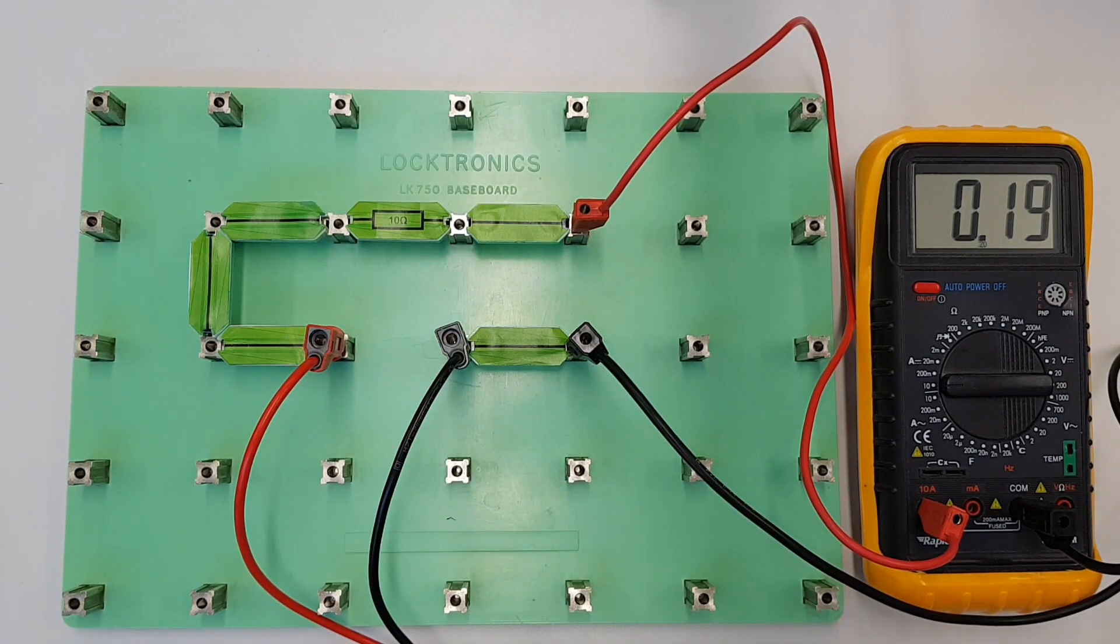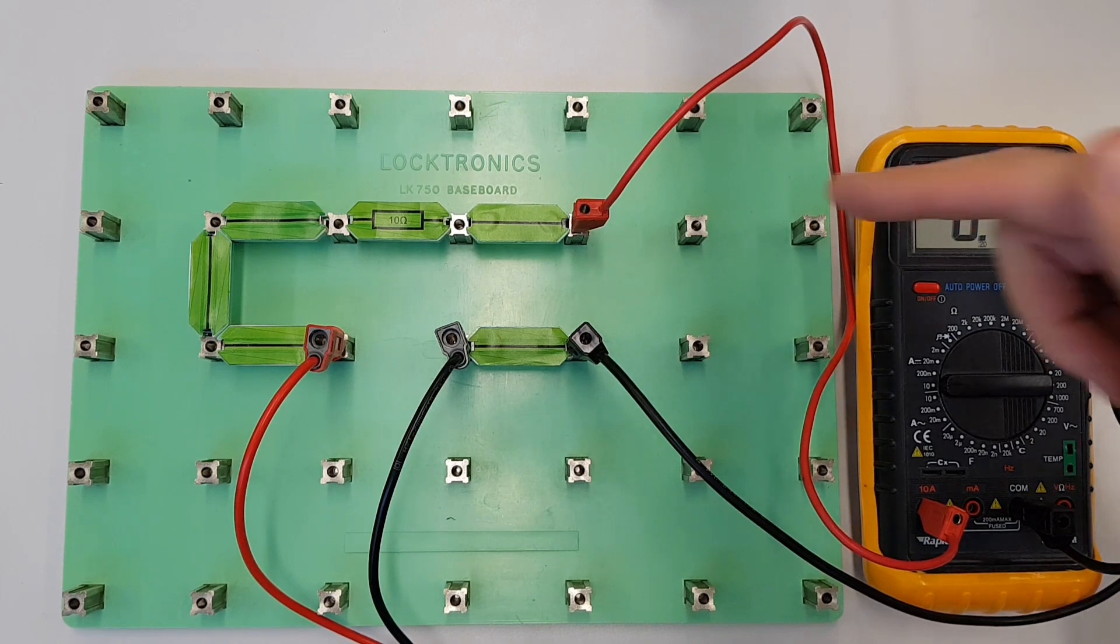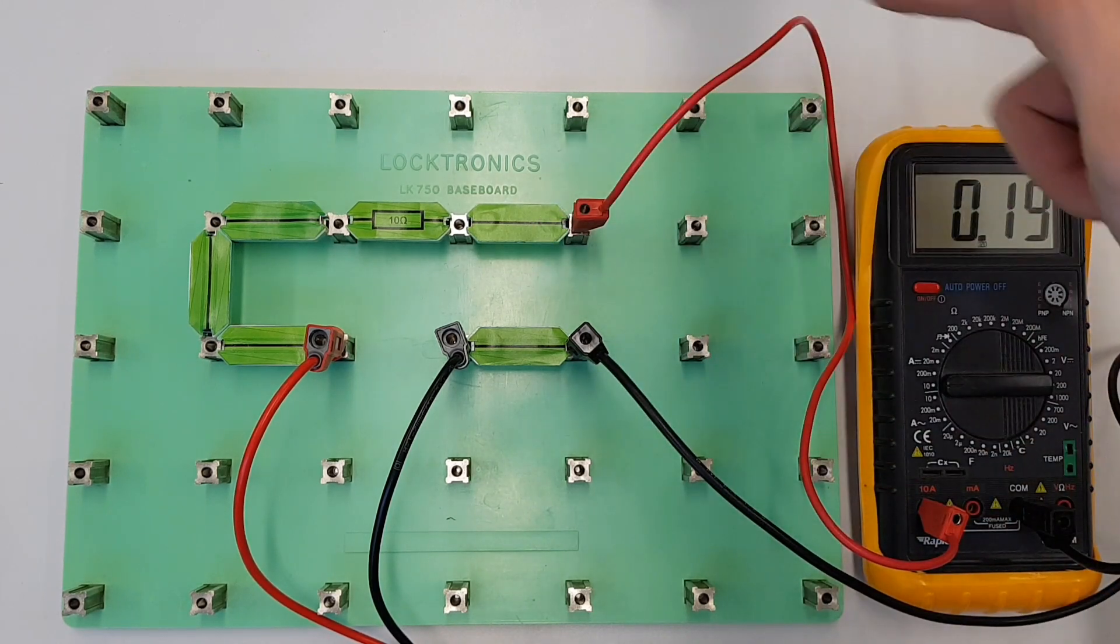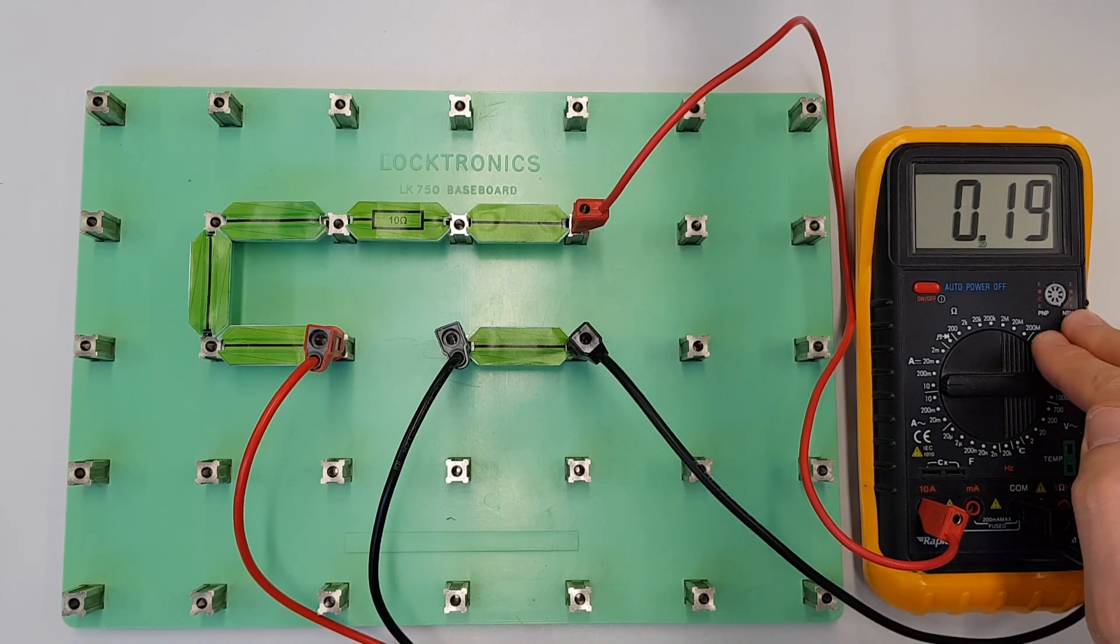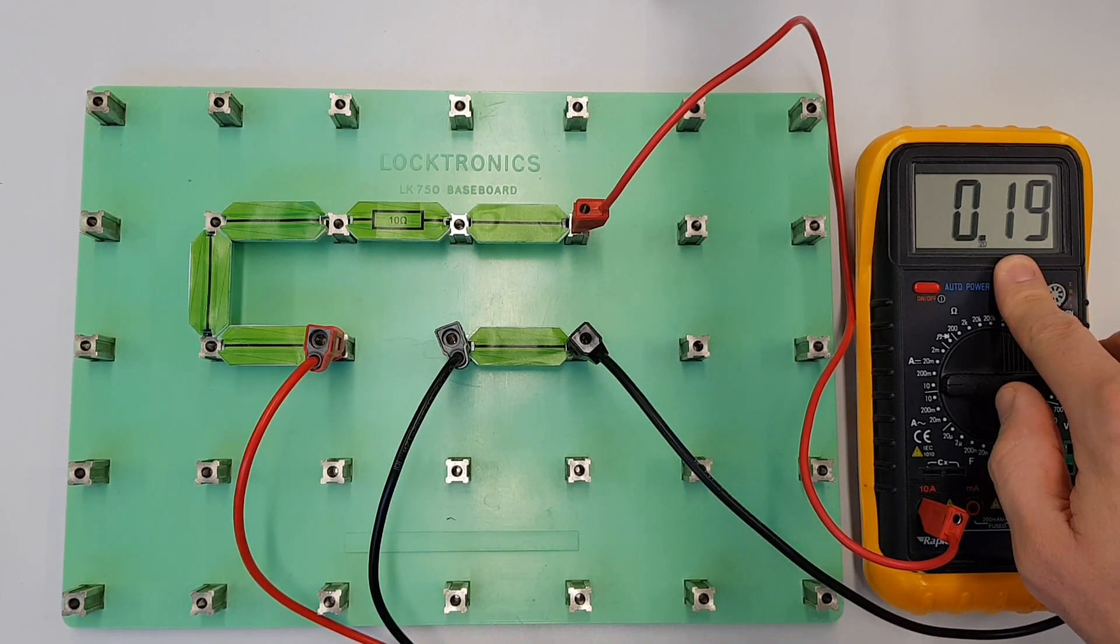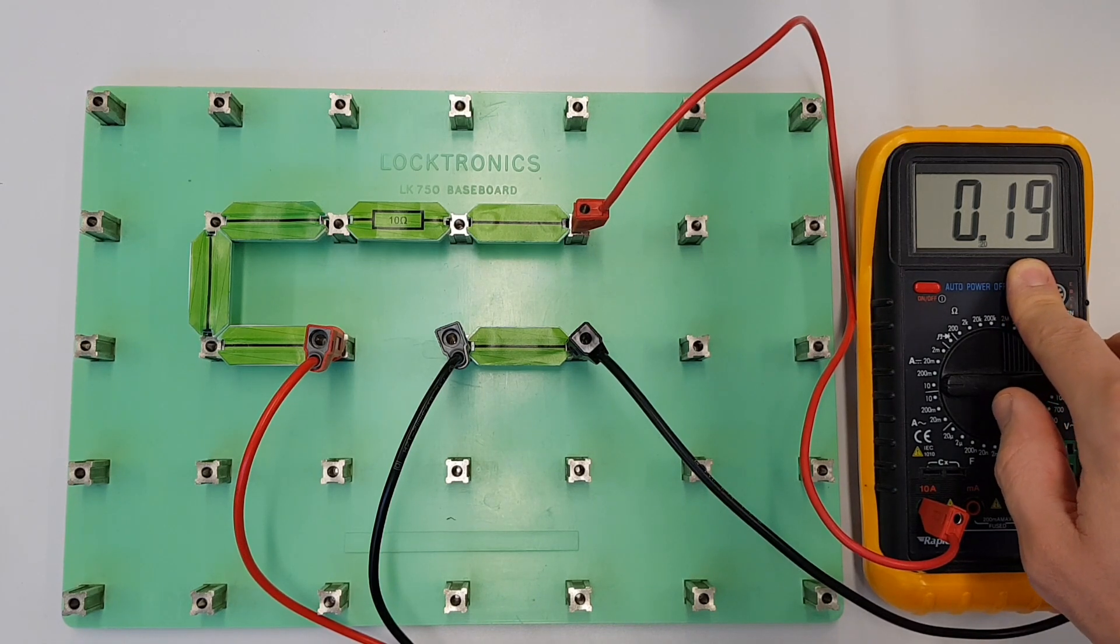So as you can see there we've got our current measurement, so we've got current flowing now out of the circuit through the meter and back into the circuit again, so the meter is forming part of the circuit and we are measuring 0.19 amps.